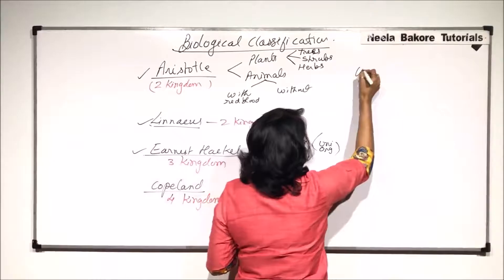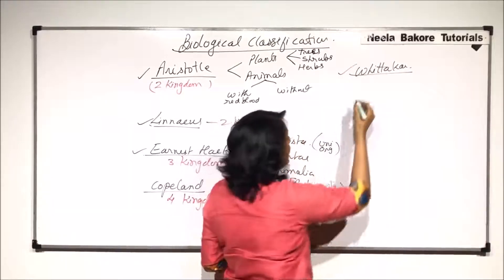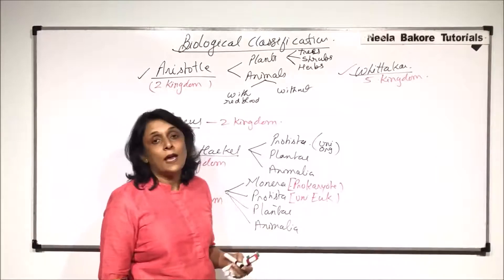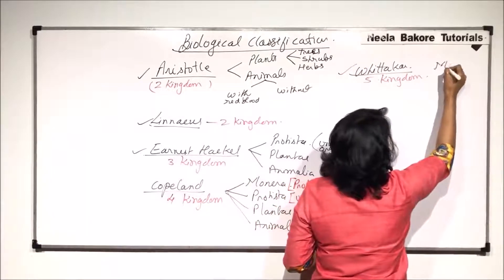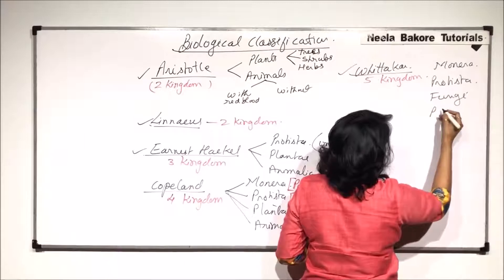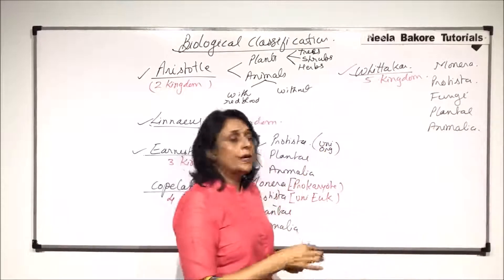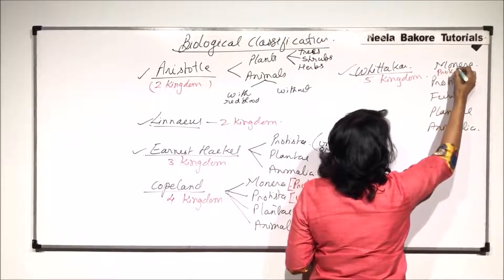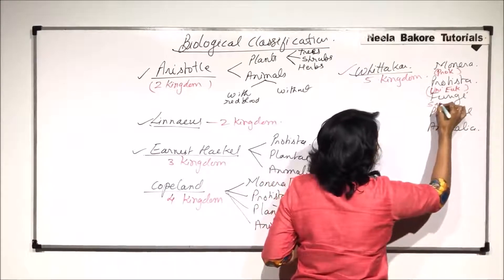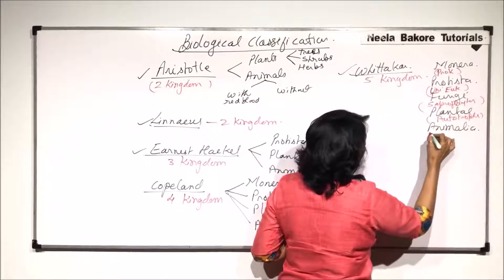Then came the five kingdom classification, given by Whittaker, which is the one most commonly used today. For the first time, Fungi or Kingdom Fungi was added. The five kingdoms are: Monera — unicellular prokaryotes; Protista — unicellular eukaryotes; Fungi — saprophytes; Plantae — autotrophs; and Animalia — heterotrophs.